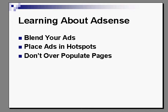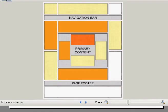Once you get approved, you want to blend your ads with your website color theme. You don't want them to stick out like a sore thumb. If you have blue clickable links on your website, then you want to have blue links on your advertisement. If the background of your page is red, then you want the background of your advertisement to be red. You want to place your ads in hotspots.